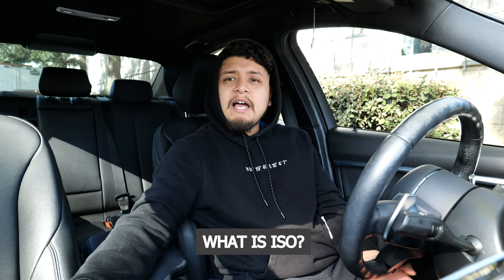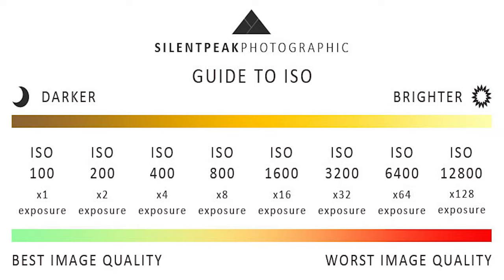And finally, let's talk about the last one — ISO. So what is ISO? ISO refers to how sensitive your camera is to light. A lower ISO value like 100 means your camera is not so sensitive to light, while a higher ISO like 12800 means your camera is extremely sensitive to light.